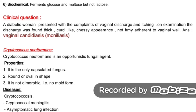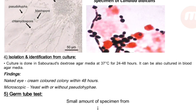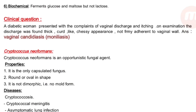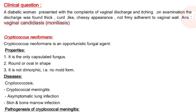Clinical question: A diabetic woman — immunocompromised — presented with vaginal discharge and itching. On examination, the discharge was found thick, cord-like, cheesy in appearance, not firmly adherent to the vaginal wall. Example: vaginal candidiasis or moniliasis.